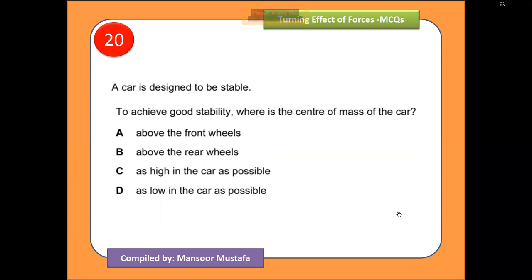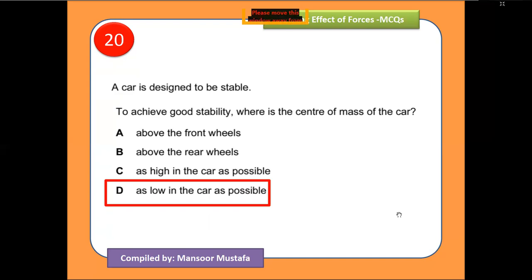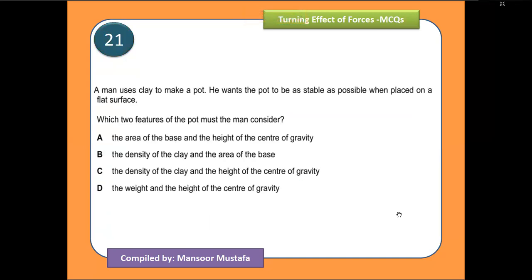The first stability question: a car is designed to be stable — what factors must be considered? Since the center of gravity position determines stability, and a lower center of gravity means greater stability, the answer is to make the center of gravity as low as possible in the car.